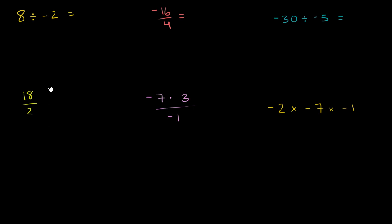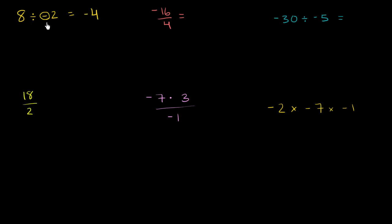Let's apply it — I encourage you to pause this video and try these out yourself. So 8 divided by negative 2: if I just had 8 divided by 2, that would be a positive 4. But since exactly one of these two numbers is negative, the answer is going to be negative. So 8 divided by negative 2 is negative 4.